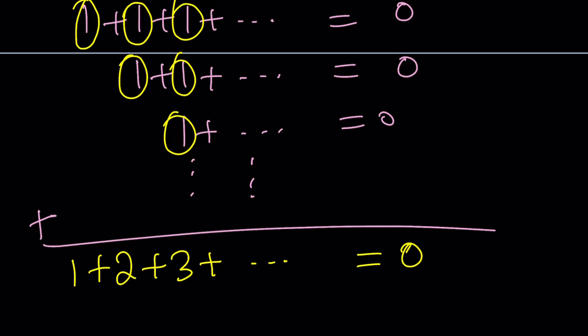Ramanujan claimed the sum was negative 1 over 12. But now I claim that the sum is 0. So was Ramanujan wrong? Again, we're going to look at the second method. Let's go ahead and find out.